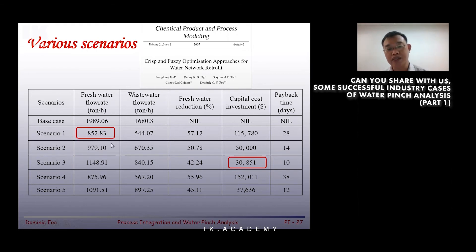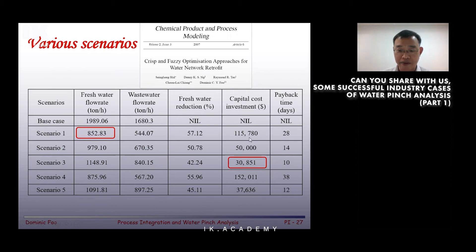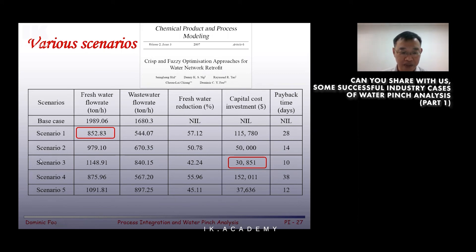But doing this means that you have to change many, many things, and the capital investment is quite high as well. You can see in the fifth column: 115,000. So it's quite a huge investment — not likely to be implemented. So we opt for other options. For example, you look at Scenario 3 with the minimum capital investment. The water saving is not too bad; it's higher than the minimum, but capital cost is relatively lower.